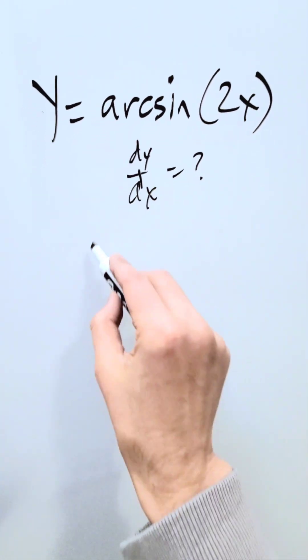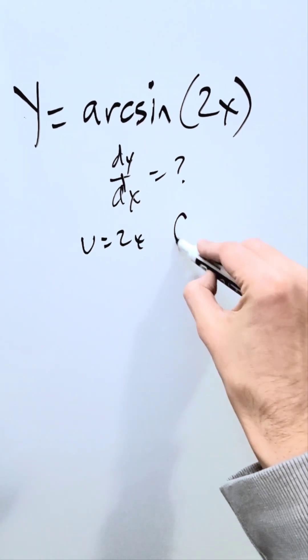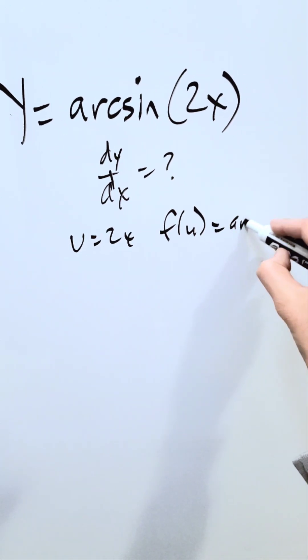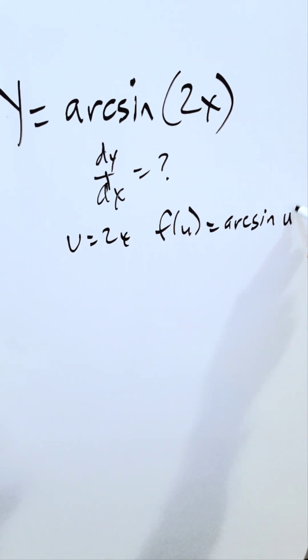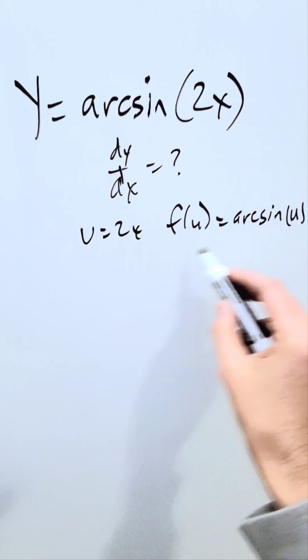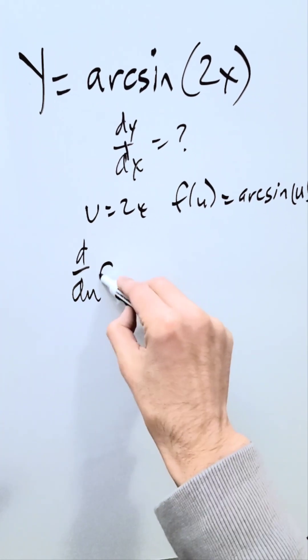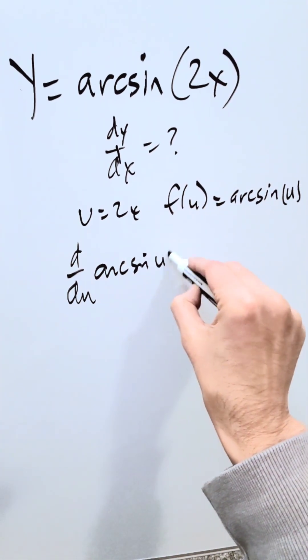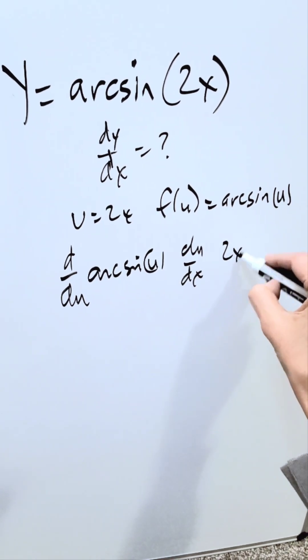If you use the chain rule, u is equal to 2x and your function with regards to that u is going to be arc sine u. Now you need to know the template for arc sine u. Derivative du, arc sine u, and then du/dx, 2x.